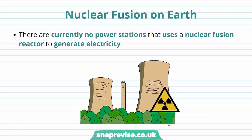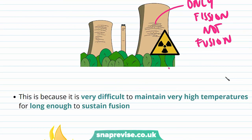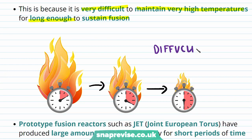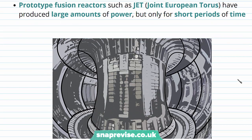We know nuclear fusion occurs in the sun, but does it happen on earth? It would be a useful way of generating energy, but there are currently no power stations using a nuclear fusion reactor. We only use nuclear fission. This is because it's very difficult to maintain the very high temperatures required for long enough to sustain fusion. There have been prototype fusion reactors such as the JET — Joint European Torus — which have produced large amounts of power but only for short periods of time.